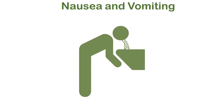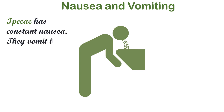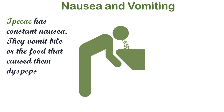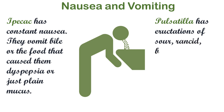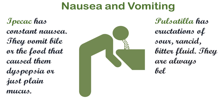Ipecac has constant nausea. They vomit bile, the food that causes dyspepsia, or just plain mucus. Pulsatilla, on the other hand, has eructations of sour, rancid, bitter fluid. They are always belching up rancid food.